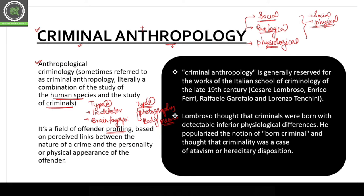Criminal anthropology offers profiling based on perceived links between the nature of crime and personality and physical appearance. Physical appearance is an important term here. According to this, we can identify criminals. This includes anthropometry. The term criminal anthropology is generally reserved for work of the Italian School of Criminology.